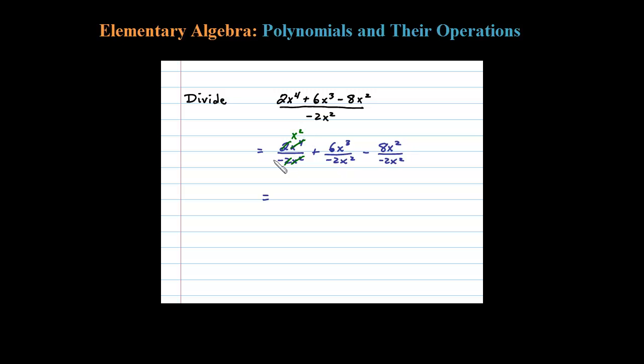Okay, so here two cancels three times and x squared cancels, leaving me with an X again. And here two goes into eight four times and the x squareds cancel.